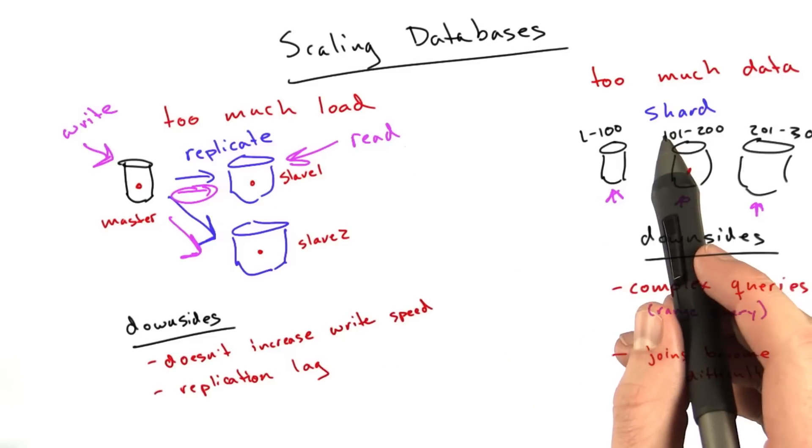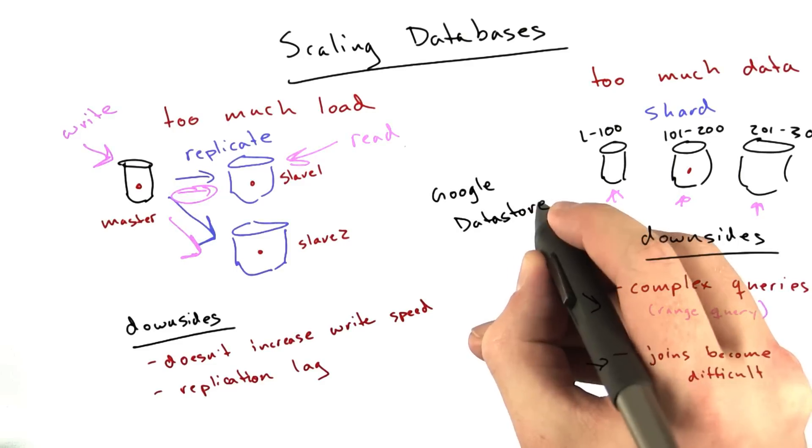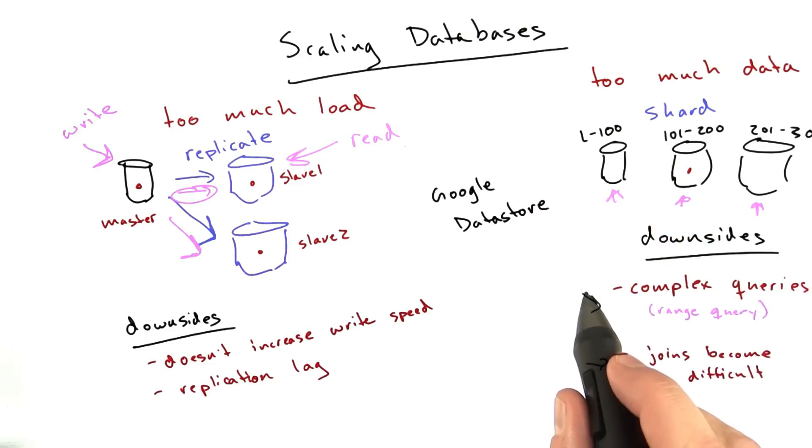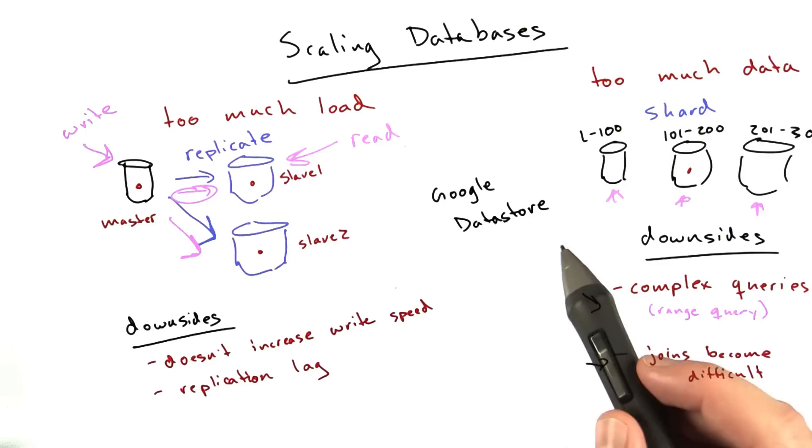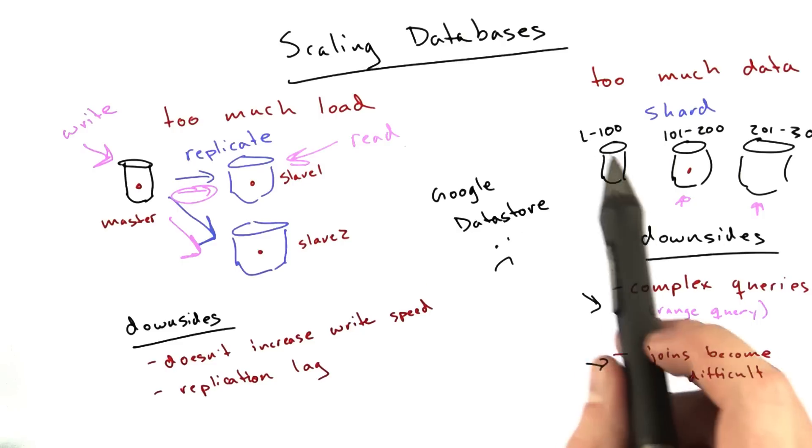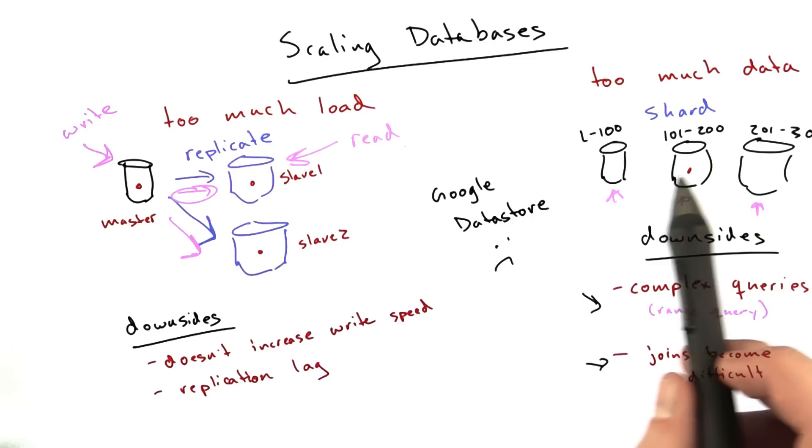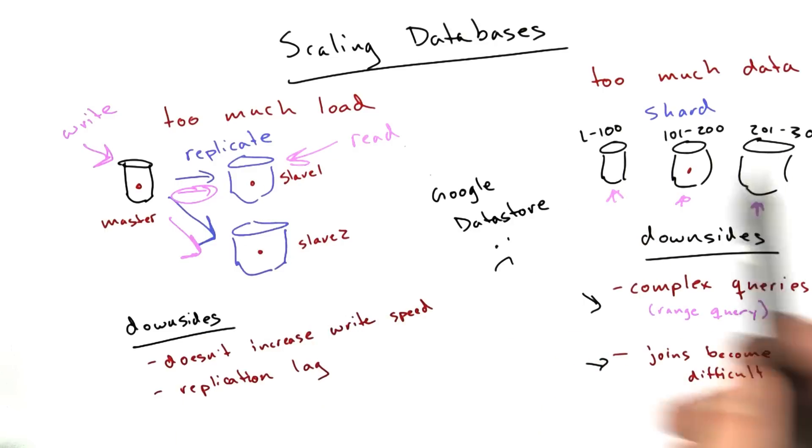Or maybe you have multiple setups. One setup for handling your general load and another setup for handling your complex queries. That's actually very common. Now, I wanted to introduce these concepts because the database we'll be using in this class, Google, the App Engine data store, actually has some of these limitations. There are no joins allowed, even though it does provide a SQL interface. And a lot of more complex queries that you could do in a general SQL database, you can't do in Google data store.